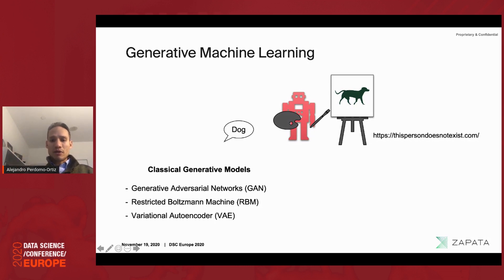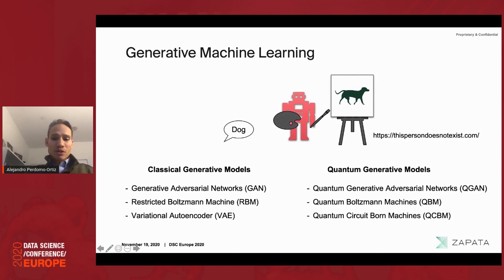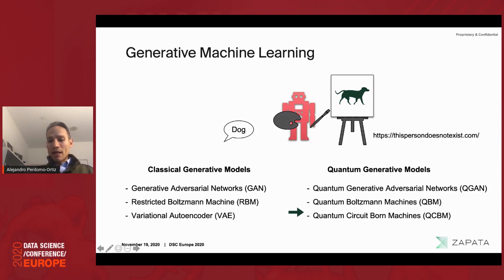Generative models are very difficult to train. In the quantum domain, people have worked on quantum GANs, quantum generative adversarial networks, and quantum Boltzmann machines. The model I'll focus on is one we developed to exploit quantum mechanics as much as possible for this type of problem. We call it the Quantum Circuit Born Machine, or QCBM.